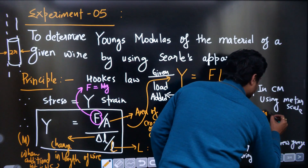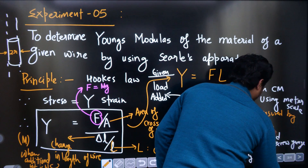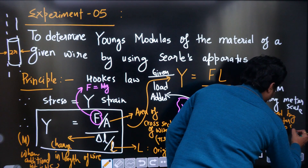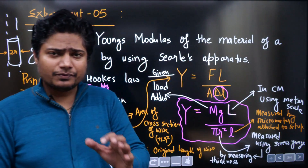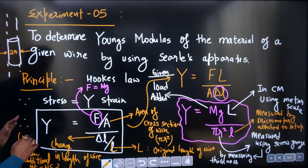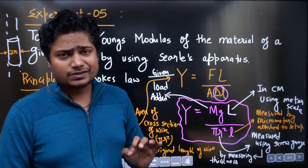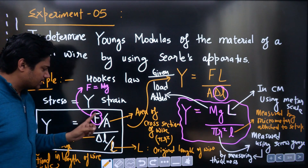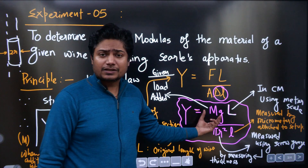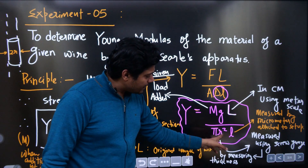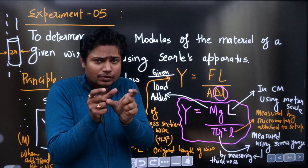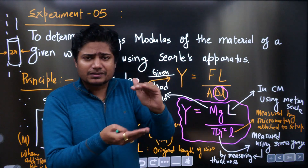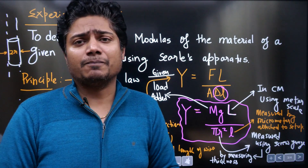There is one micrometer attached to the setup. The principle is simply stress upon strain equals Young's modulus — Hooke's law. Mg is the extra weight added; L is the original length measured using the scale; pi R squared uses R from the wire thickness measured by a screw gauge (2R = thickness); and the small change in length is measured by another screw gauge fixed with the apparatus.